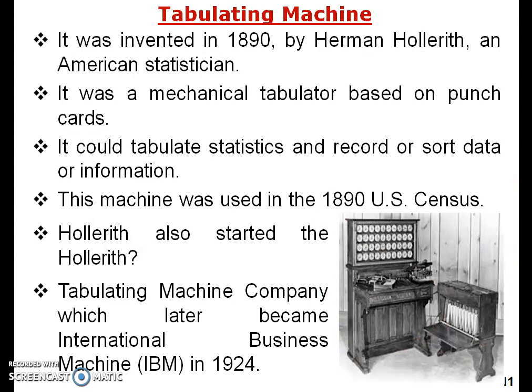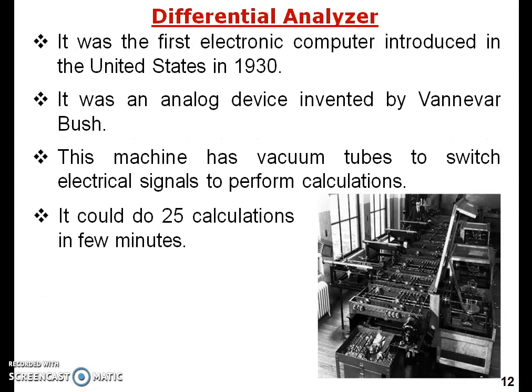The Tabulating Machine was invented in 1890 by Herman Hollerith, an American statistician. It was a mechanical tabulator based on punch cards, used both for input and output. It could tabulate statistics and record data. This machine was used in the 1890 US Census. Hollerith's Tabulating Machine Company later became IBM in 1924.